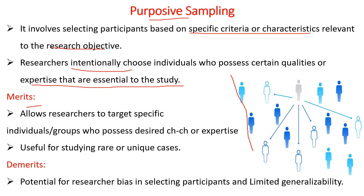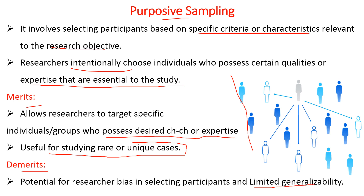Coming to the merits of purposive sampling: it allows researchers to target specific individuals or groups who possess desired characteristics or expertise, which is useful for achieving the research objective. It is also useful for studying rare or unique cases not found very commonly. The demerits include potential for researcher bias in selecting participants and limited generalizability, which are common disadvantages of non-probability sampling.